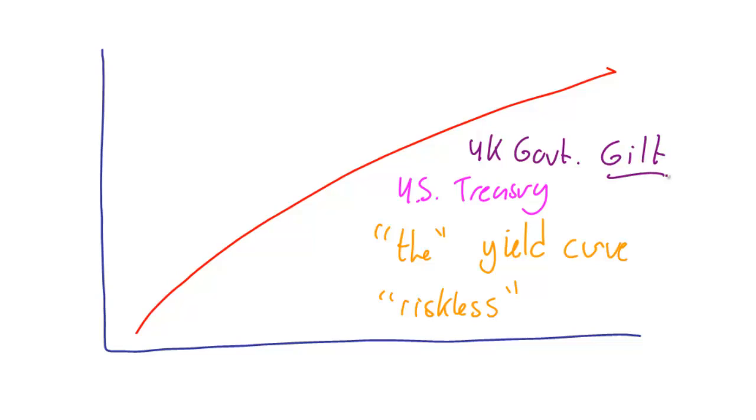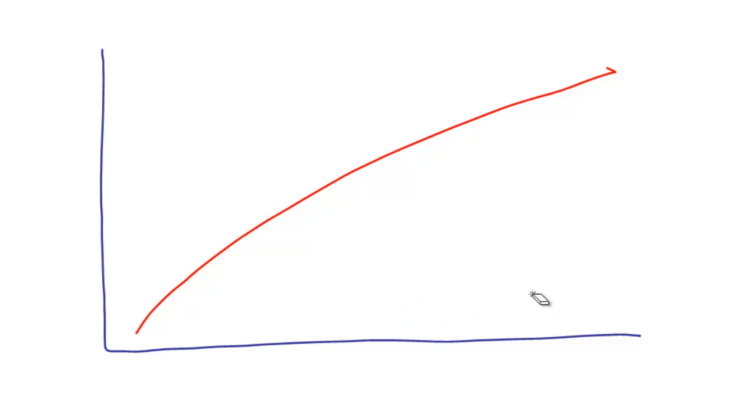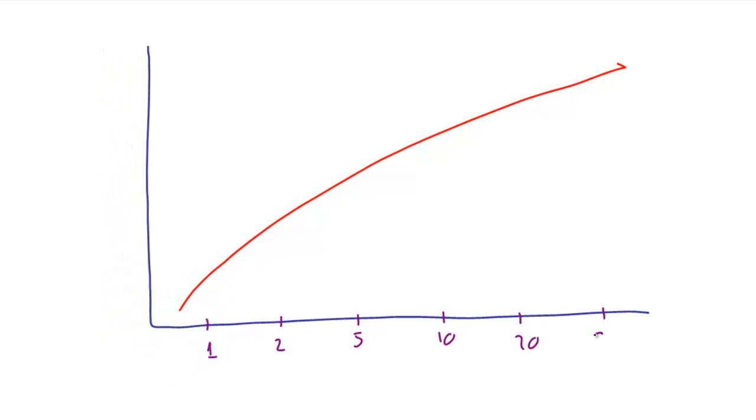We'll go for a simpler definition. What we'll say is it's the yield curve which is the lowest curve of any at all. So if we put some maturities on here, we'll go for one year, 2, 5, 10, 20, and 30.